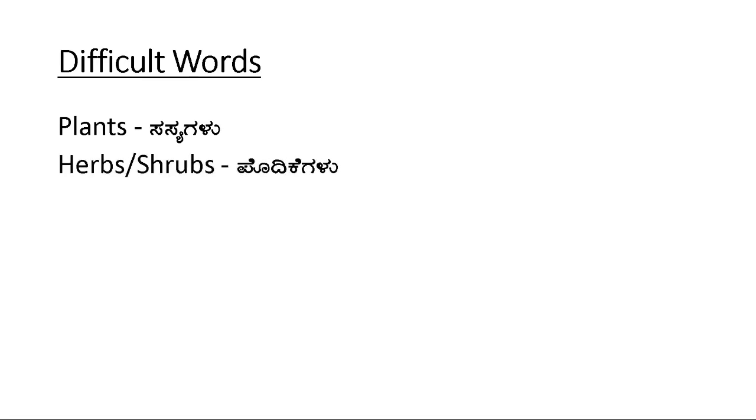Let's discuss further about plants. First we'll see some of the difficult words here like plants, and then sasya galu, gida galu, anthanu karithi. Plants anthak karithi includes herbs or shrubs. Herbs or shrubs antharak podikke galu anthak karitharay, and trees maragalu, creepers, climbers.